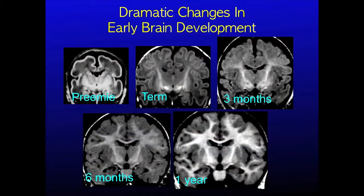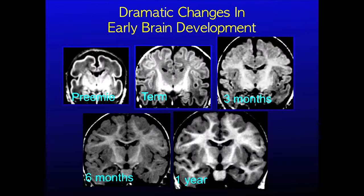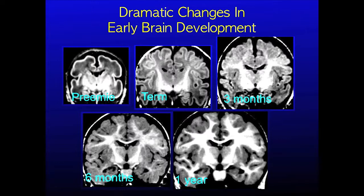Look at these MRI images. Here the babies are facing us and the MRI allows us to see inside the head. During this time period the brain increases more than three times in volume, the neurons develop more than twice the number of connections, and the energy used by the brain also increases by more than twice.